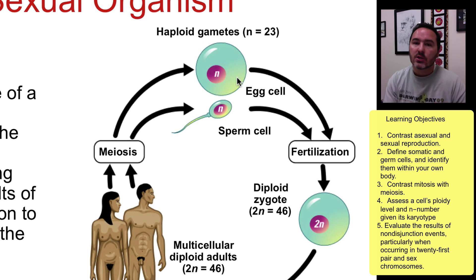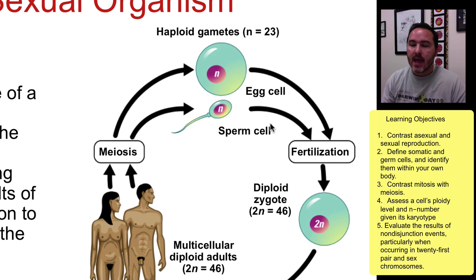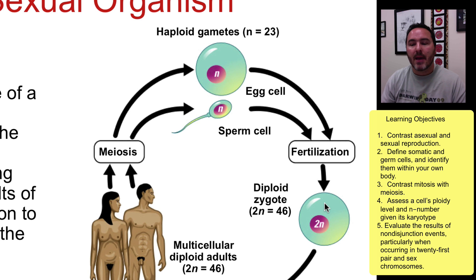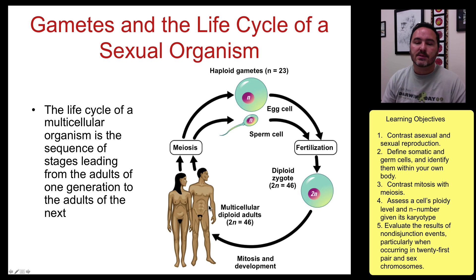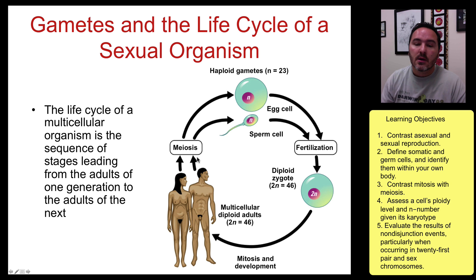When our sexual cells inside of our testes and ovaries go through meiosis, they produce eggs and sperm. Eggs and sperm are haploid because they have only an N, not a 2N condition, and our N number is 23. So there are only 23 chromosomes in an egg cell and 23 in a sperm cell. When the egg and sperm come together through fertilization, you get back to a 2N or diploid condition. Then that cell goes through mitosis until it becomes the adult, and at sexual maturity, meiosis can begin again to produce haploid gametes.